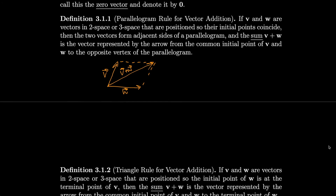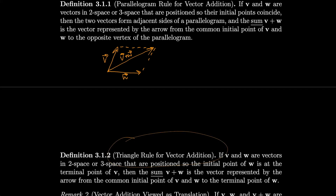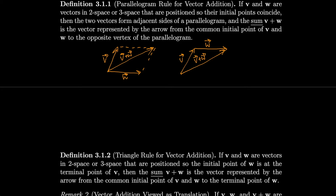In addition to the parallelogram rule, there is the triangle rule for vector addition. That says if v and w are vectors in 2-space or 3-space positioned so that the initial point of w is at the terminal point of v, then the sum v plus w is the vector represented by the arrow from the initial point of v to the terminal point of w. So I draw v, then place w at the terminal point of v, and go from the initial point of v to the terminal point of w — that's v plus w.